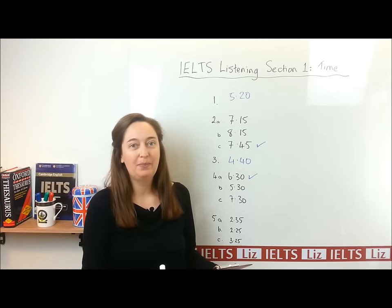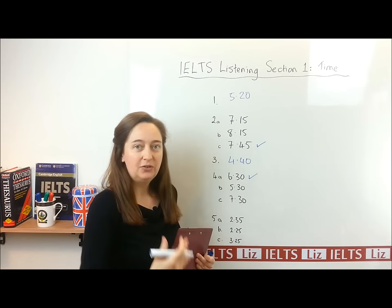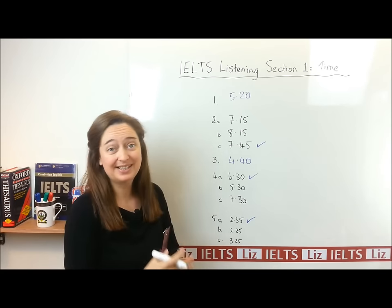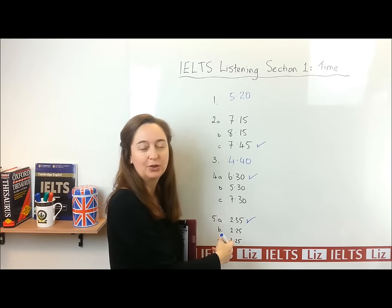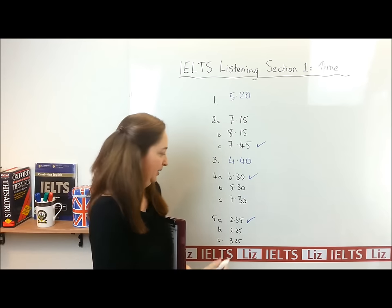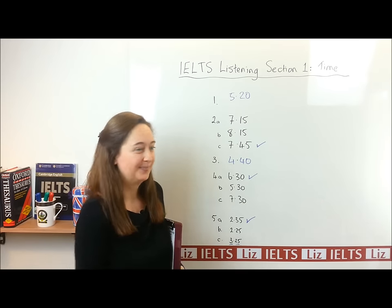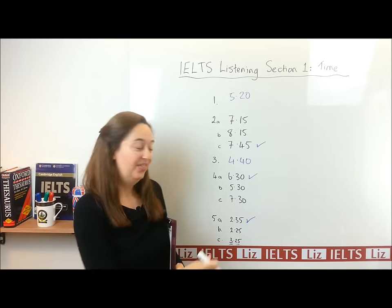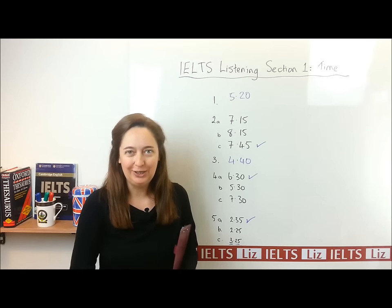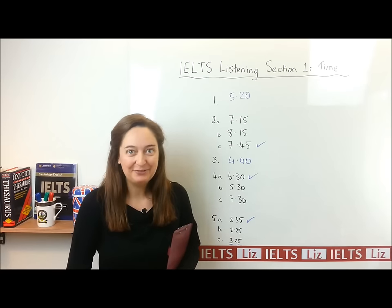And for number 5, '25 to 3' — that was quite difficult. 25 minutes before 3 o'clock is A. You can see that this one was quite difficult because I said '25 to 3,' and here you've got the number 3 and the number 25 — but that's the wrong answer. A is the right answer. That is very normal in the IELTS listening test — they will try to trick you and give you the numbers, but that's not the right answer. So be careful with that.